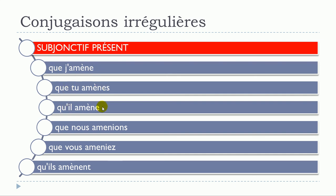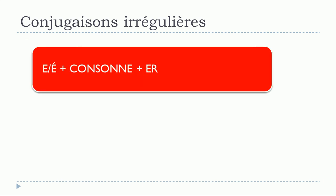It's exactly the same modification — the accent grave on top of the E: amène, amène, amène. For nous, you don't touch it: amènions. Vous amèniez, and then the modification for ils at the plural form: amènent.